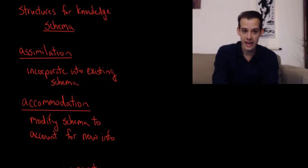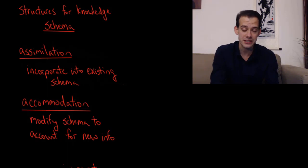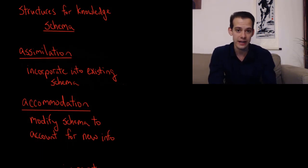These are sets of cognitions that help us to make sense of the world. Children are constantly interacting with new information that they've never experienced before, so they have to do something with this new information. They can either fit it into the schema that they've already built up. So they have schema for different things, and they encounter something new.